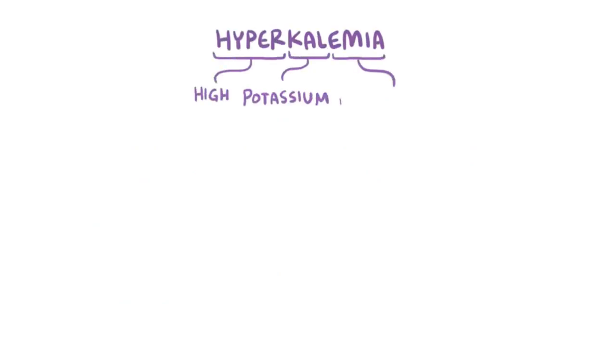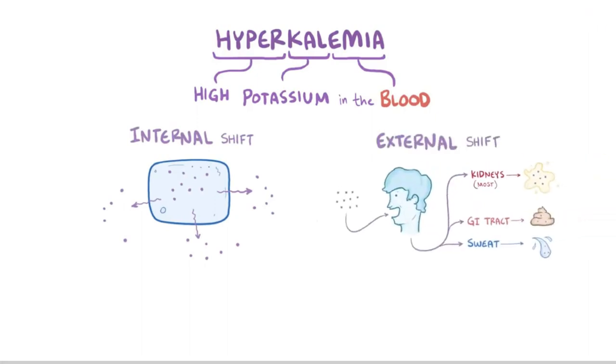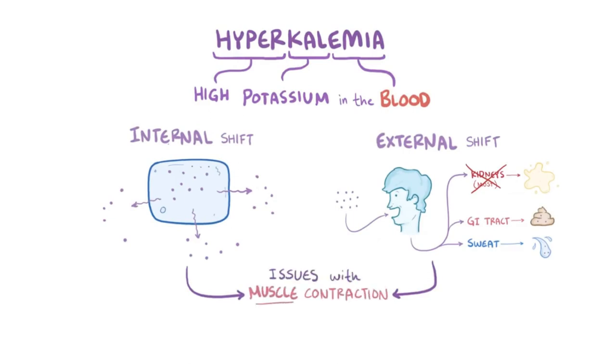As a quick recap, hyperkalemia describes a high concentration of potassium in the blood, which can be the result of shifts in internal potassium balance where potassium moves out of the body's cells, as well as external potassium balance problems, having to do with the intake of potassium and typically the kidney's ability to regulate its excretion. Either way, the high potassium leads to issues with muscle contractions, which can be issues with the smooth, skeletal, or cardiac muscles.